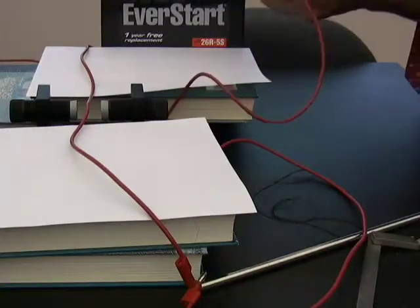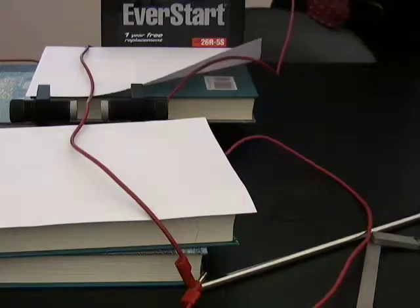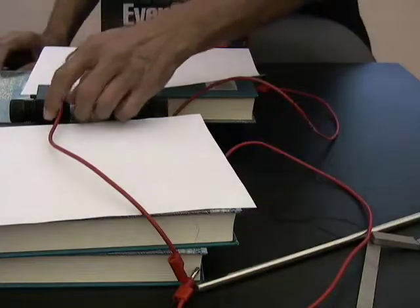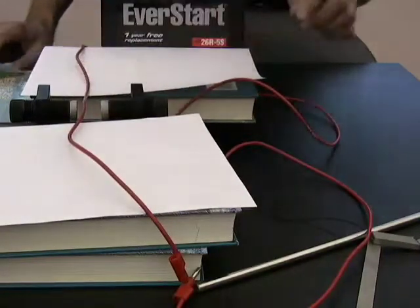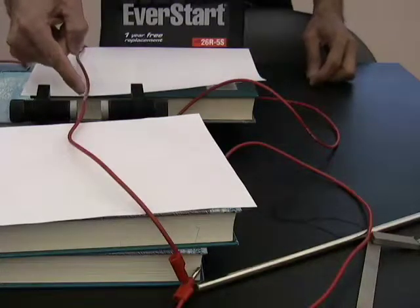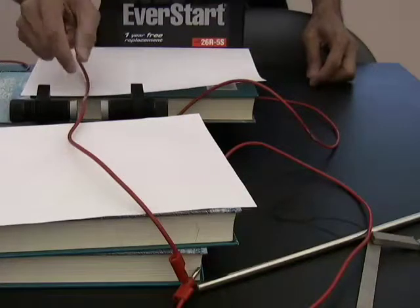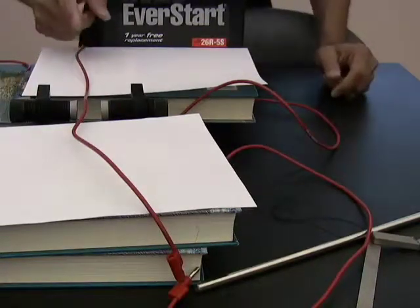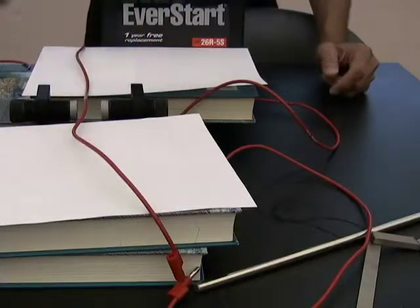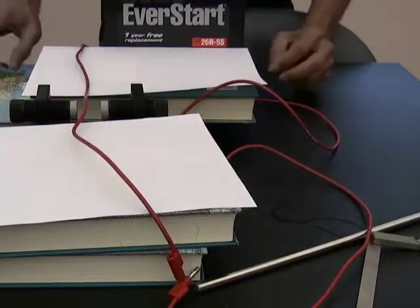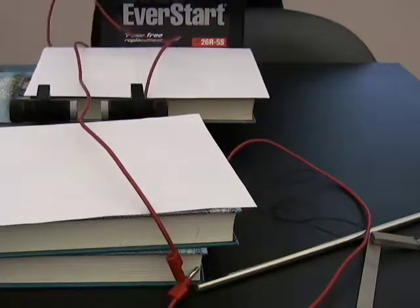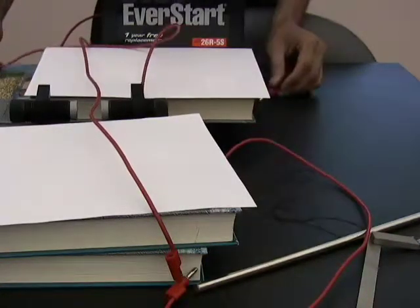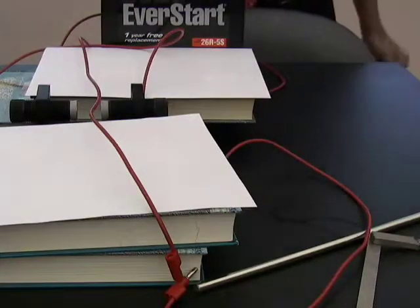When a current is passed through the conductor and it is placed in a magnetic field, a force acts on it. If I reverse the direction of the current, the conductor is pulled down instead. So the direction of the force depends on the direction of the flow of current.